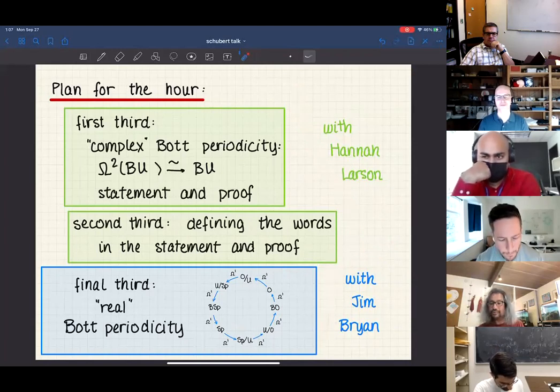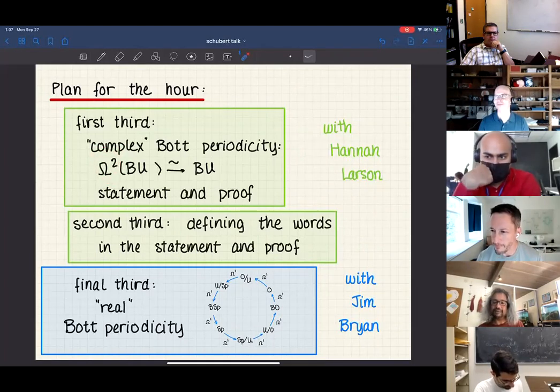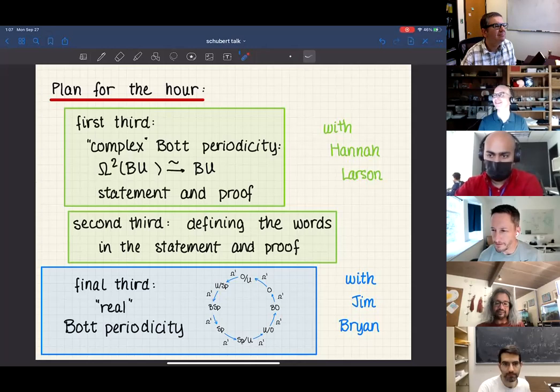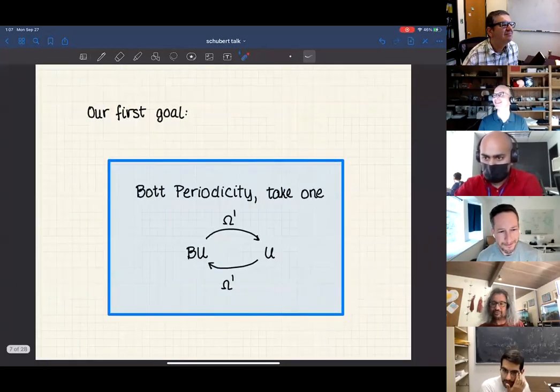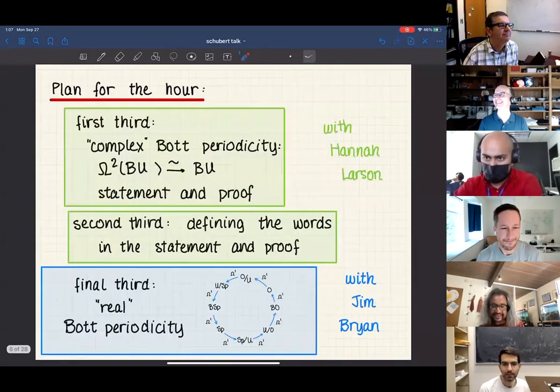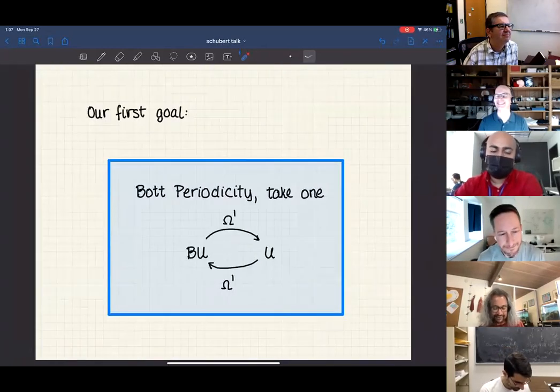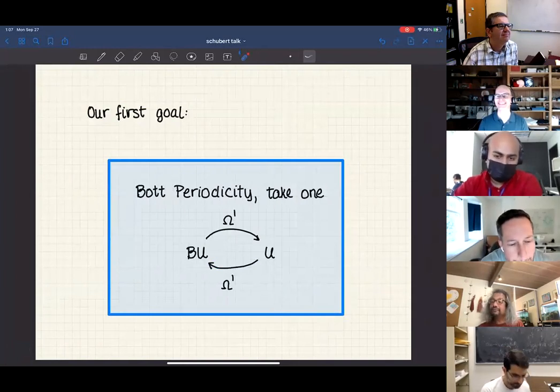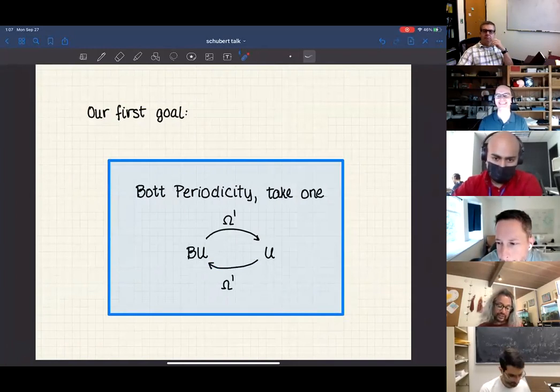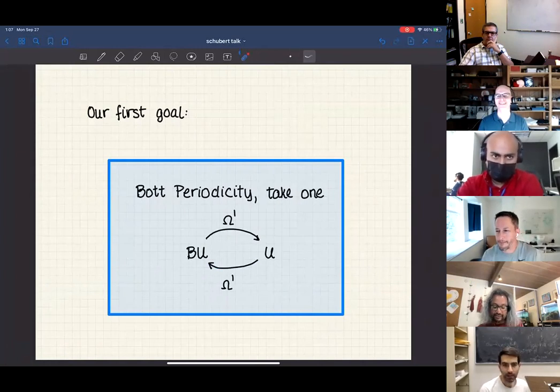My first goal is to figure out what this means and make sense of Bott periodicity, where we're going to take loops from U to BU. Let me start with something I feel happy about. I don't like the unitary group because I don't understand what it is, but over the complex numbers, GLN deformation retracts onto U_N.